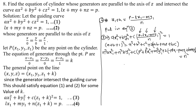The locus of point P means instead of x₁, y₁, z₁ we write simply x, y, z. So we write this equation in terms of x and y. In addition, we simplify the terms.